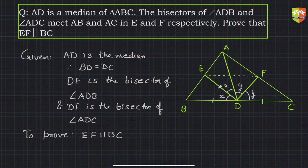So we have to prove EF is parallel to BC. Whenever we see that there is something parallel to be proven, we can get a hint that we can use basic proportionality theorem and its converse.